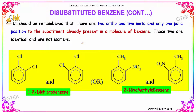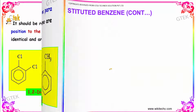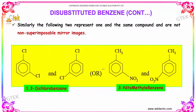It must always be remembered that there are 2 ortho and 2 meta positions for a disubstituted benzene, but para has only one position. So certain compounds that appear different are not isomers but the same compound. Similarly, even for meta, they are not isomers but the same compounds.